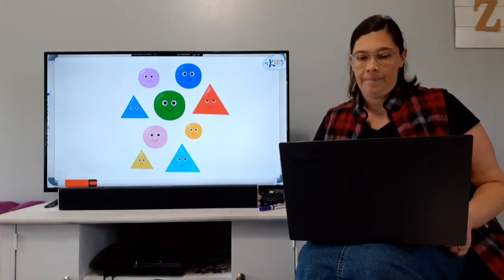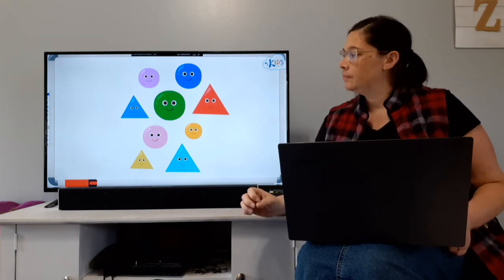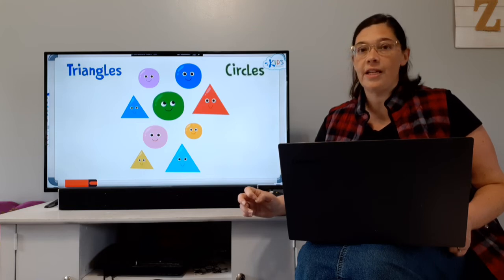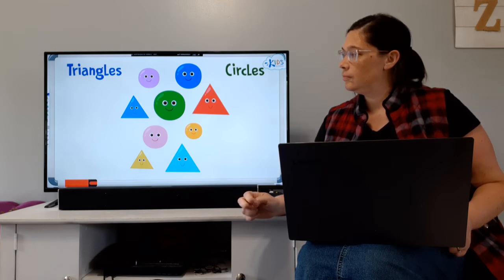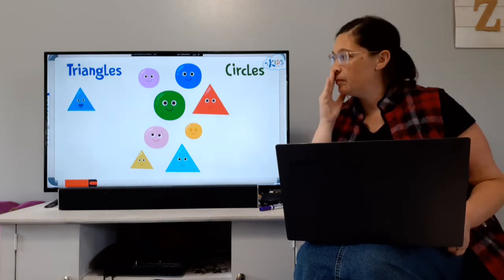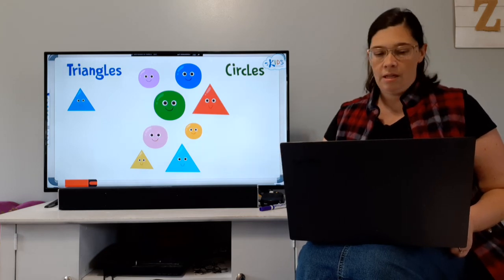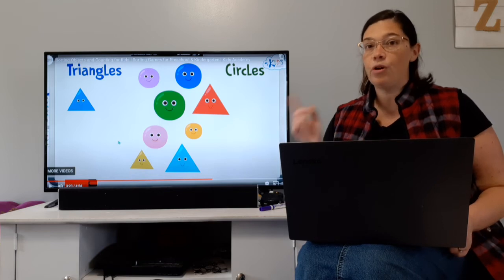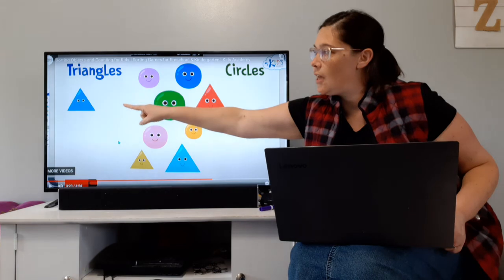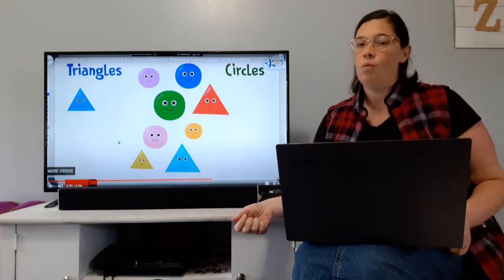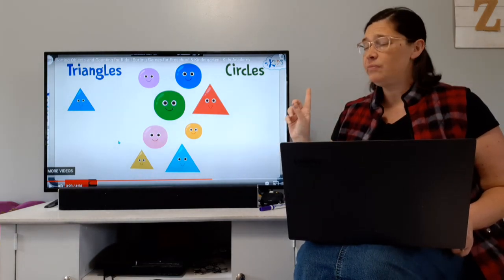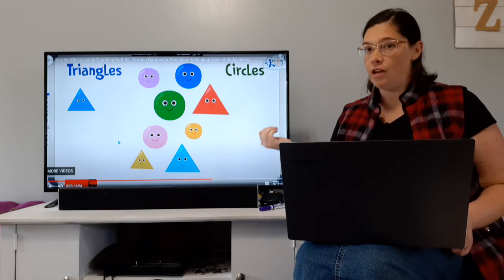This time the groups will be different, so we'll have to pay close attention to details. We have a group of shapes and we'll be sorting them into triangles and circles. Let's use the same strategy as before — sort group by group, shape by shape — starting with the triangles. Before we move on, let's count how many total shapes there are: one, two, three, four, five, six, seven, eight, nine — so there are nine total shapes.